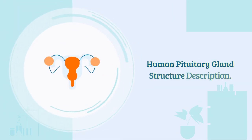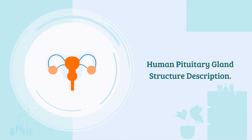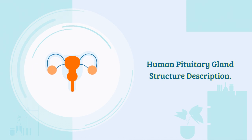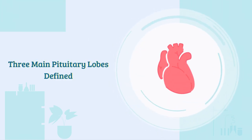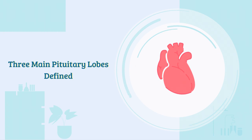Structure: the human pituitary gland is oval-shaped, approximately the size of a chickpea, and weighs around 0.5 grams on average. It consists of three main lobes. The anterior pituitary lobe, or adenohypophysis, arises from an invagination of the oral ectoderm known as Rathke's pouch.